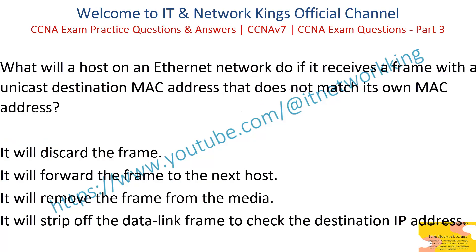What will a host on an Ethernet network do if it receives a frame with a unicast destination MAC address that does not match its own MAC address? It will discard the frame. It will forward the frame to the next host. It will remove the frame from the media. It will strip off the data link frame to check the destination IP address. Answer: It will discard the frame.